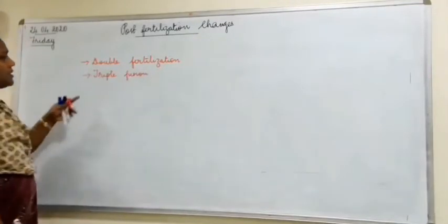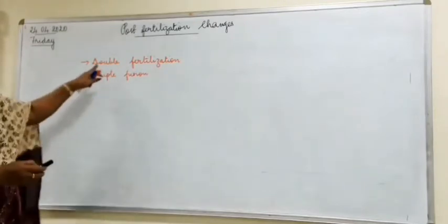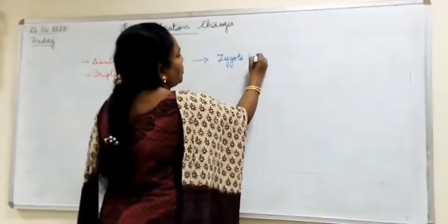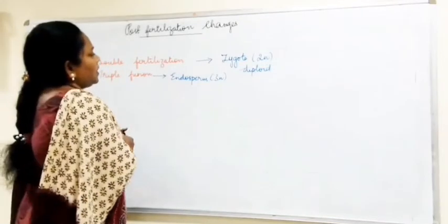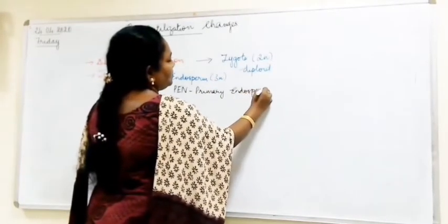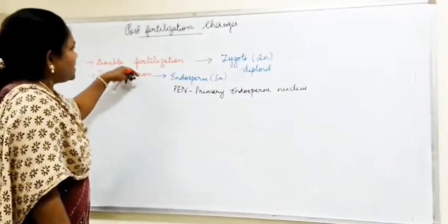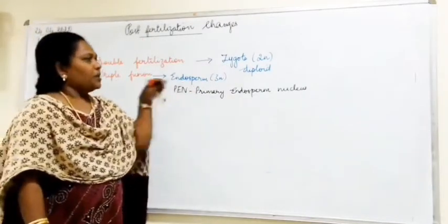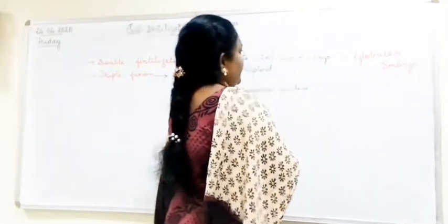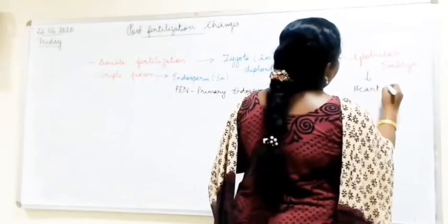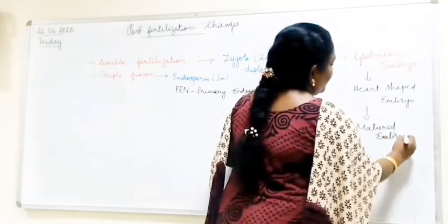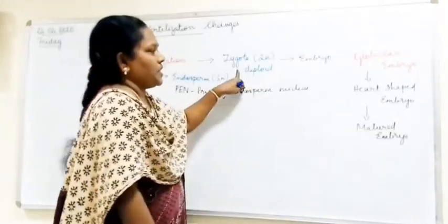These are the main concepts you have learned in the sexual reproduction of flowering plants. As a result of double fertilization, the end product is the zygote. The chromosomal number after triple fusion gives the primary endosperm nucleus. As a result of double fertilization, the zygote is formed and the endosperm is formed. The zygote then develops into the embryo, leading to the heart-shaped embryo stage.